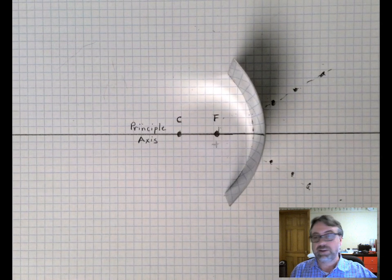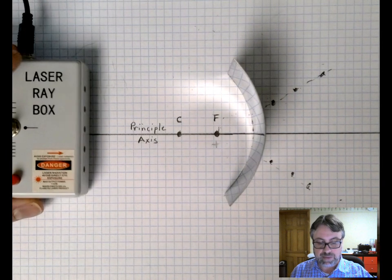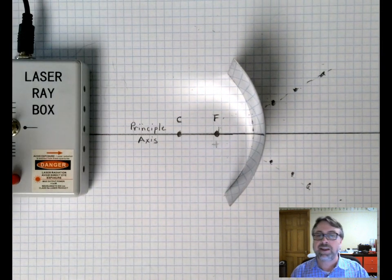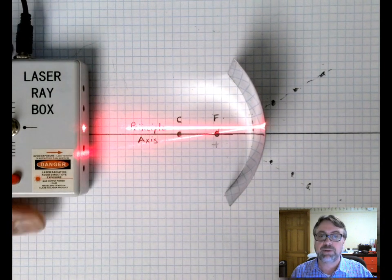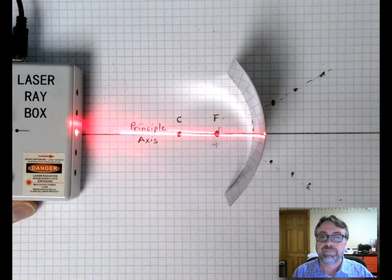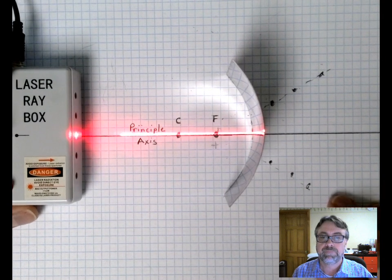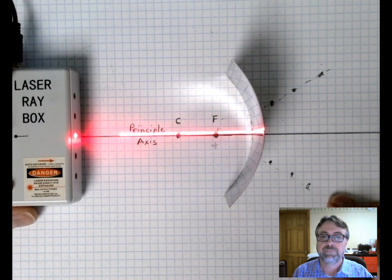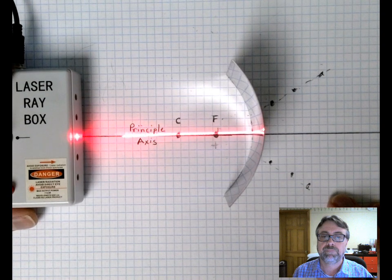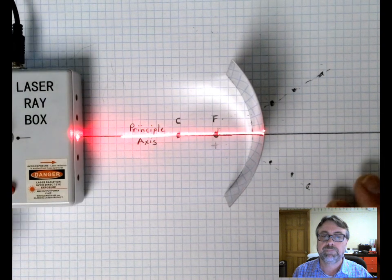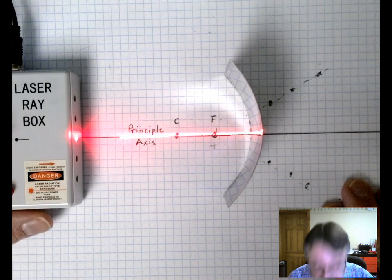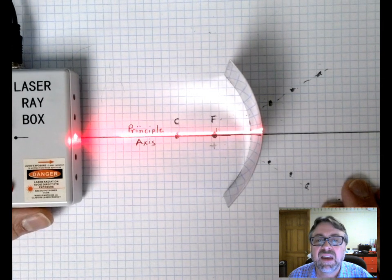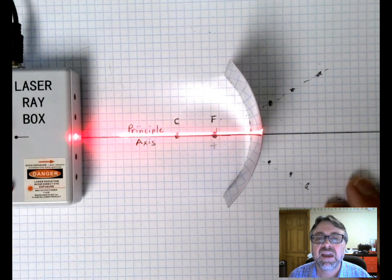Now I have here a laser ray box and what I'm going to do is send a light ray through the principal axis and we'll see that it reflects straight back. So let me line it up a little bit. There we go. That's pretty good.